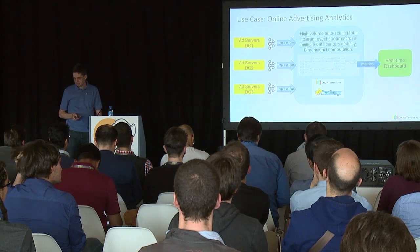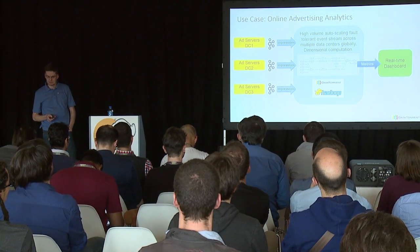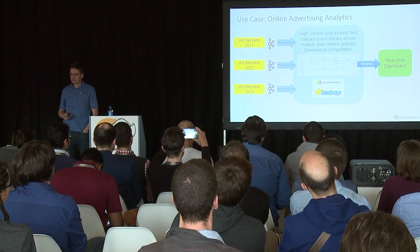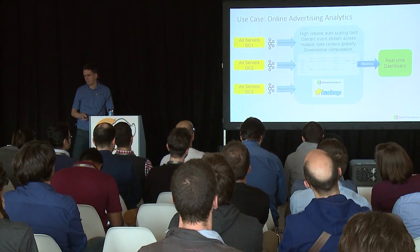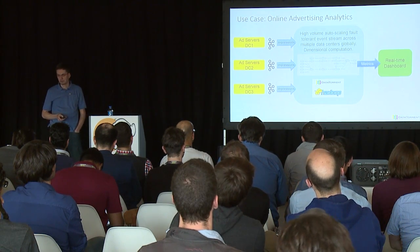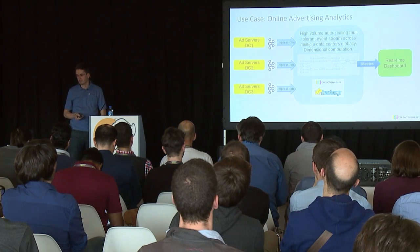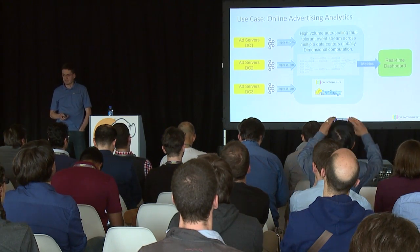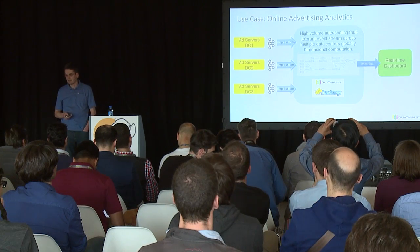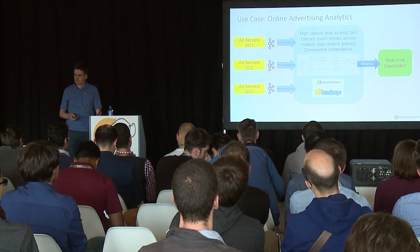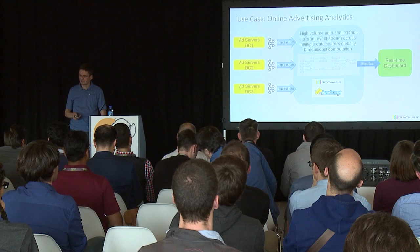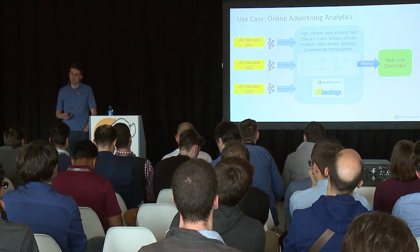How could this look in a use case? We have customers in online advertising. You have ad servers distributed across the globe running in different locations, and Kafka is used to ship events into a central Hadoop cluster where the stream processing happens. There is geographical distribution, a high volume stream, and low latency — that is important. In the processing cluster, DataTorrent runs on top of Hadoop and you define an application as a directed acyclic graph.